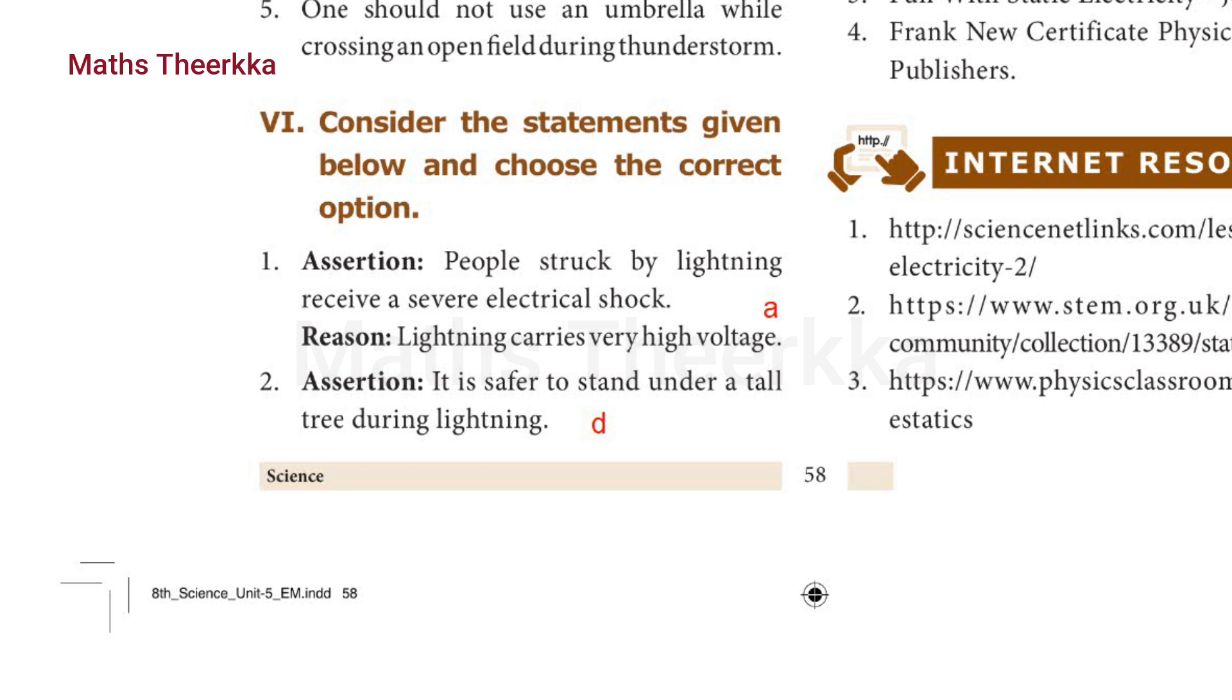Second one: assertion - it is safer to stand under a tall tree during lightning. Reason - it will make you the target for lightning. The answer is option d: assertion is false but reason is true. Now we will see our electricity lesson in the book. Thank you, answer to our next lesson.